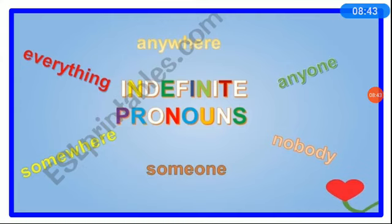Let us look at some examples. Everything, anywhere, anyone, nobody, someone, somewhere — these are all some of the indefinite pronouns. Take a second and think: don't we use all these kinds of words, not just in English children, but think about these kinds of words in any language that you know — be it Kannada, be it Hindi, and of course English. You can think of even more words.